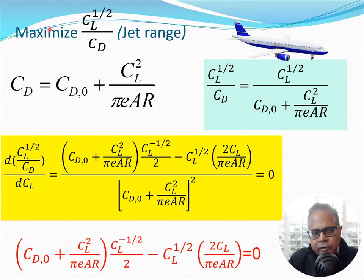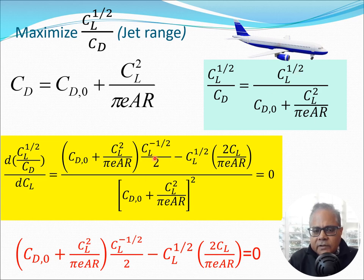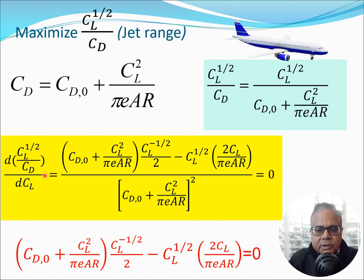The final case is maximizing CL^(1/2)/CD, which governs jet range maximization. Taking CD from the drag polar and writing CL^(1/2)/CD, I differentiate using the quotient rule. The derivative of CL^(1/2) is (1/2)·CL^(-1/2). Collecting terms, the denominator squared appears below, while the numerator — set to zero at the stationary point — gives us the equation we need to simplify.